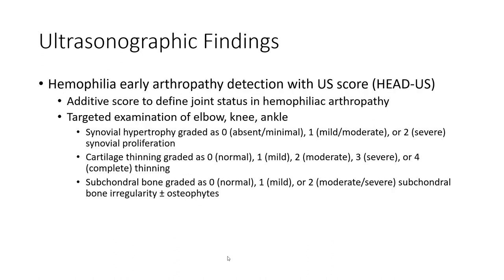Hemophilic early arthropathy detection with ultrasound score. This is a predictive score to define joint status in hemophilic arthropathy, targeting examination of the knee, elbow, and ankle.